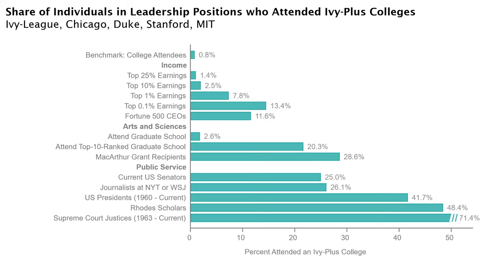This is not just true when measuring outcomes by income. 20% of students that attend top-ranked graduate programs come from these 12 undergraduate institutions. 28% of those who receive the prestigious MacArthur Genius Grants come from these schools. And a very large fraction of those in prominent public service positions in the United States come from these schools as well. It's very similar in Chile. These schools seem to be a very important pathway towards leadership positions in society.